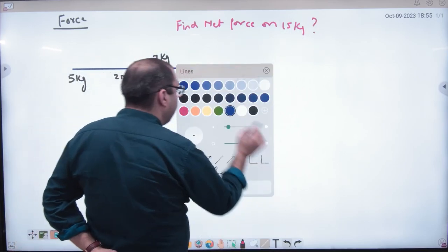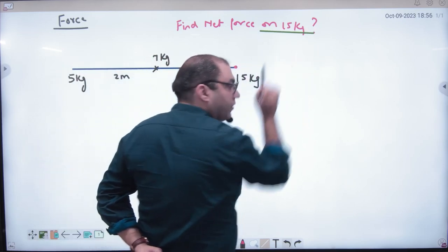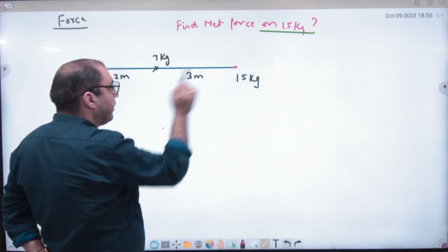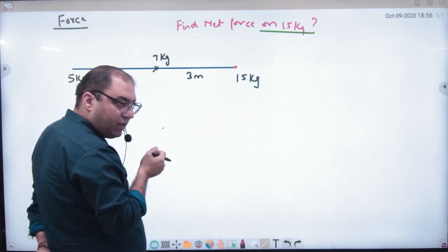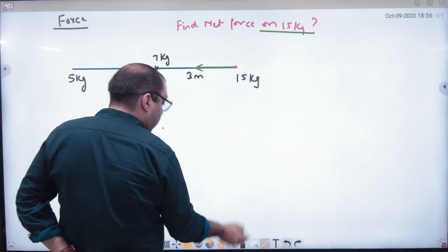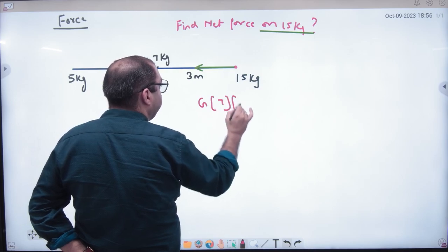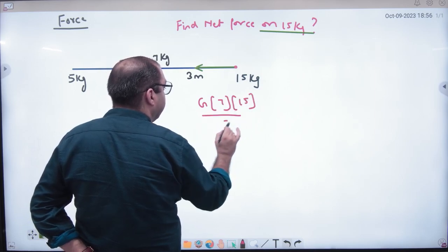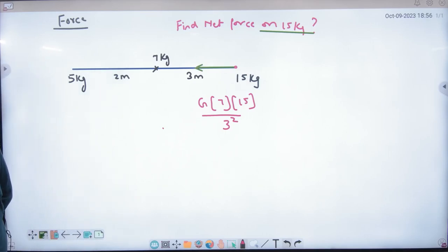So rule number one. For the net force, what will you draw? All the vectors. 15 kg. So 15 kg to 7 kg and 5 kg, what will we do? Attract. 7 kg to 15 kg attract. Say force formula G into 7 into 15 divided by 3 square. G, M1, M2 by R square. Think of it?